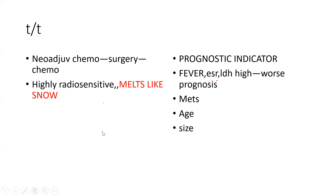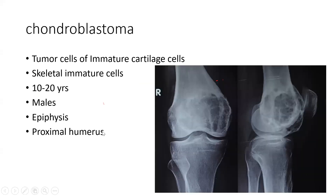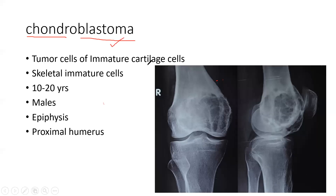I think we have finished Ewing's sarcoma. Now we come to chondroblastoma. Chondro means cartilage; blastoma is a type of tumor. Chondro refers to immature cartilage cells.